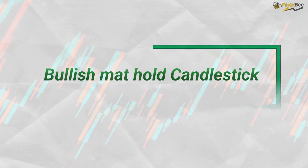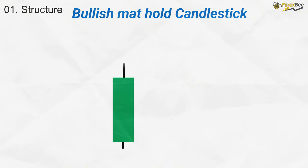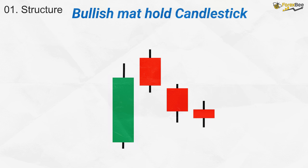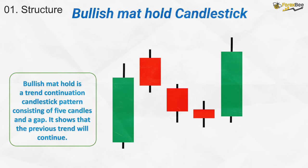Next, we have the bullish mat hold candlestick pattern, a trend continuation signal that consists of five candles. The first is a strong bullish candle indicating significant buying pressure and upward momentum. The second candle is a small bearish or neutral one that gaps down slightly, signaling a brief pause. The third and fourth candles are also small and bearish or neutral, remaining within the range of the first bullish candle, showing that selling pressure is not enough to reverse the trend. Finally, the fifth candle is a strong bullish one closing higher than the first candle, confirming that the uptrend is set to continue after the brief consolidation.